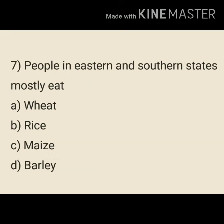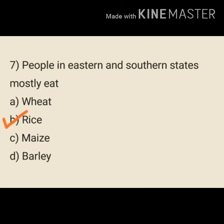Question number 7: People in eastern and southern states mostly eat — A. Wheat, B. Rice, C. Maize, D. Barley. Our answer will be B. Rice. People in eastern and southern states mostly eat Rice.